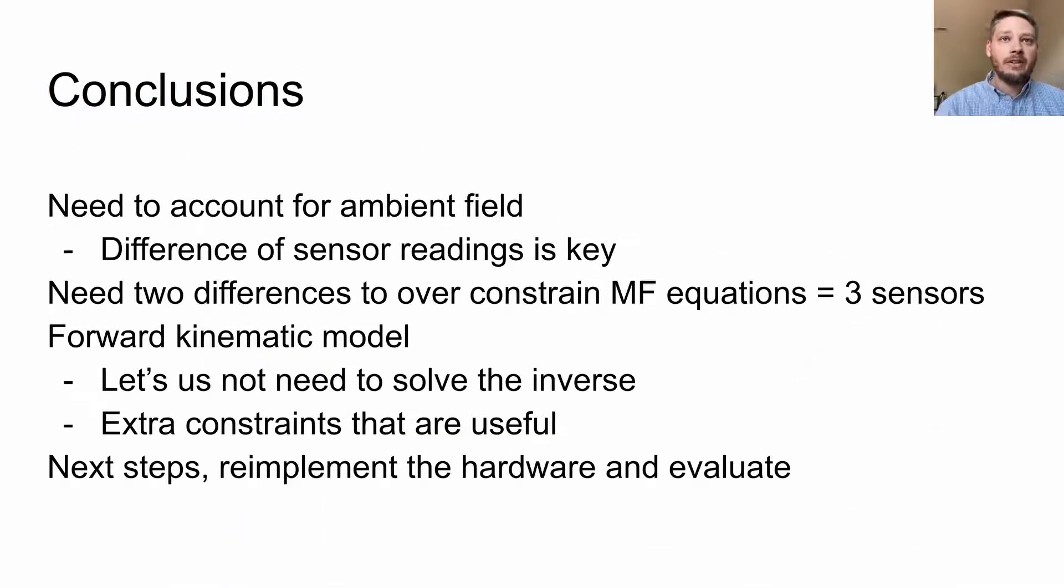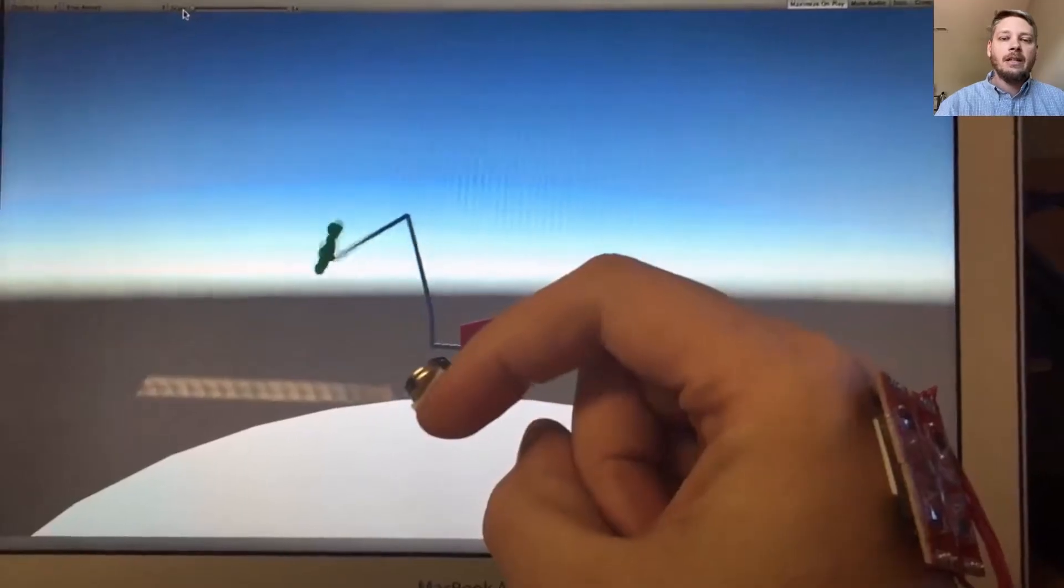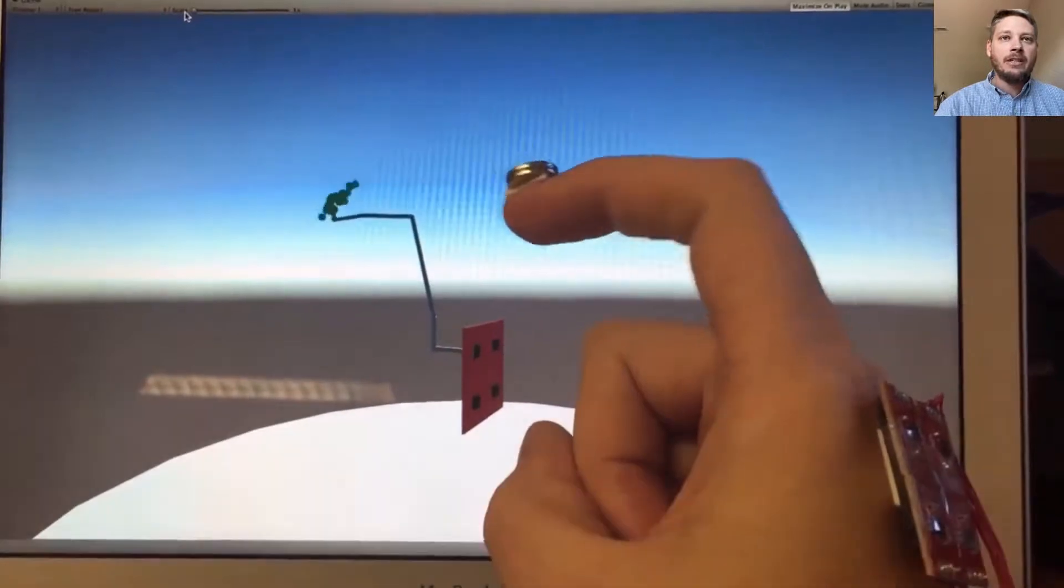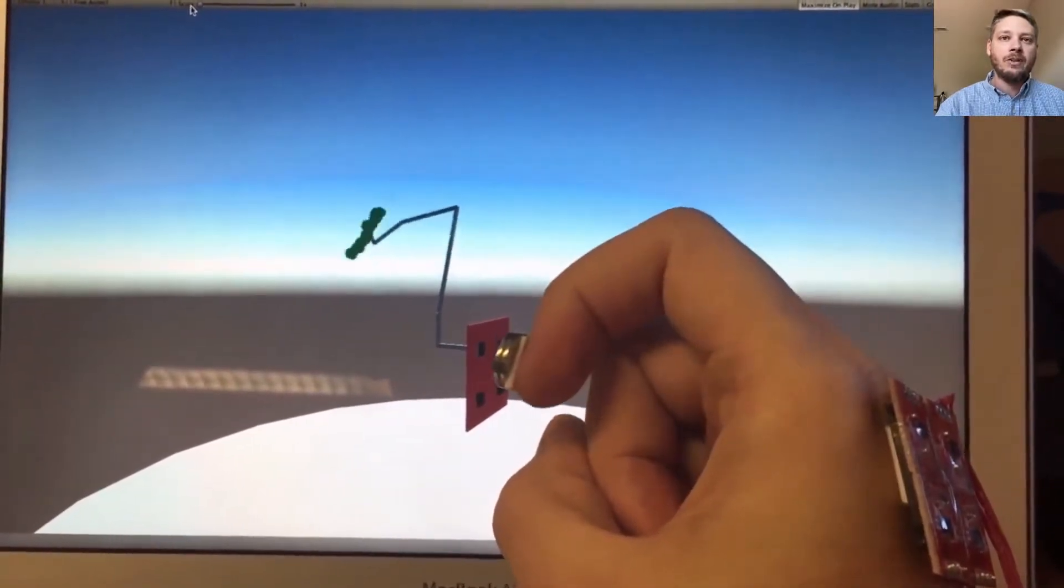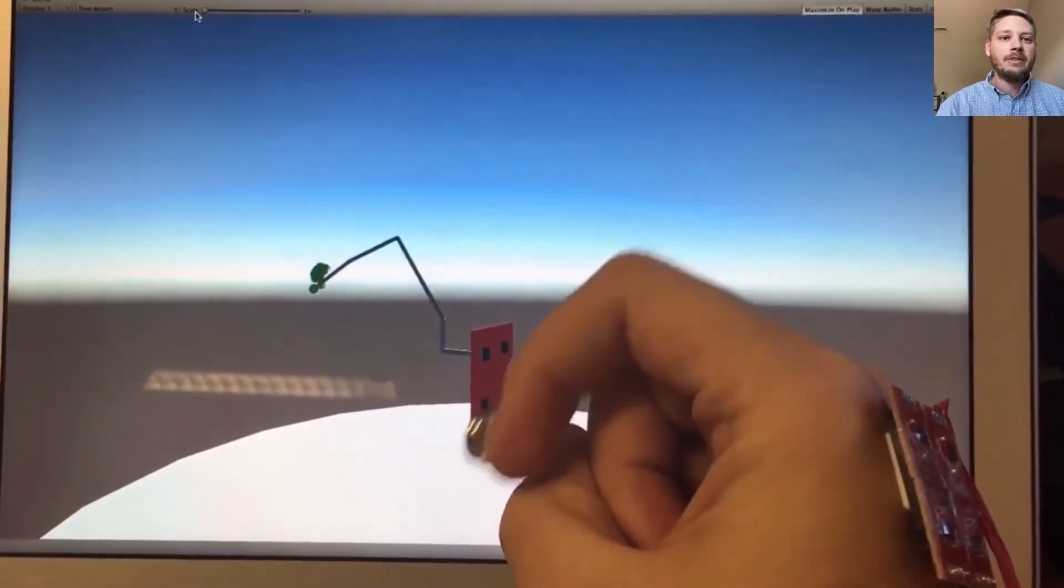In conclusion, we need to account for the magnetic field, and we can use three sensors to do that. The forward kinematic model let us get around the challenge of solving this inverse equation and provided extra constraints. Next steps would be to re-implement and evaluate this. I did an early implementation that worked reasonably well, but my ground truth tracking failed, so I wasn't able to test it formally. But I think it's very promising. Thanks.